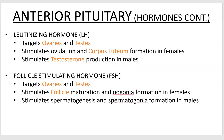Luteinizing hormone, or LH, is still produced by the anterior pituitary. It targets the ovaries and testes — the gonads. In the ovaries it stimulates ovulation, which is the release of an oocyte, and the formation of the corpus luteum, which produces estrogen and progesterone to maintain the uterine lining. In males it stimulates testosterone production.